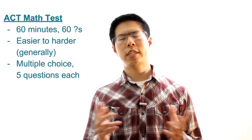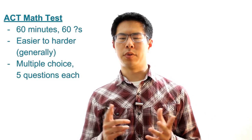The ACT math test is the second test of the ACT. It is 60 minutes long and has 60 questions. The questions generally go from easier to harder, but there will be at least some exceptions to this general rule. The questions are all multiple choice with five choices each.